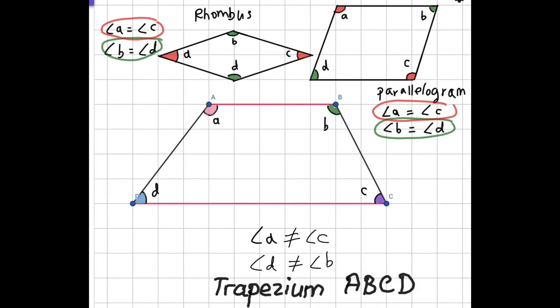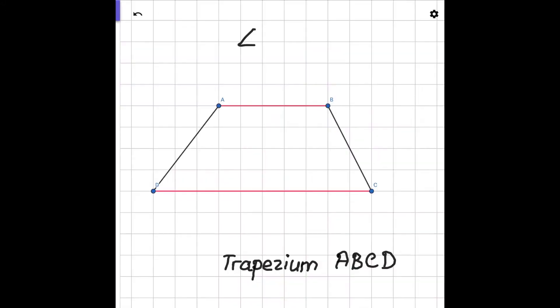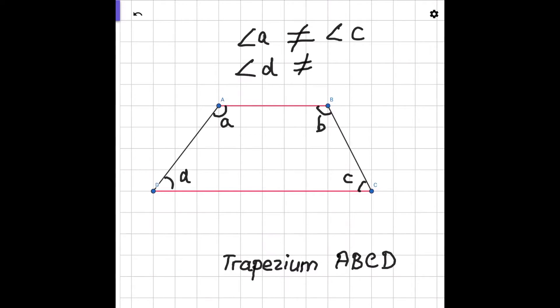The second property of a trapezium is that opposite angles are not equal. In a rhombus, opposite angles are equivalent, and the same goes for a parallelogram. So it's good to notice that in a trapezium, the opposite angles are not equivalent. Using the application, we're going to prove that angle A is not equal to angle C, and angle D is not equal to angle B.